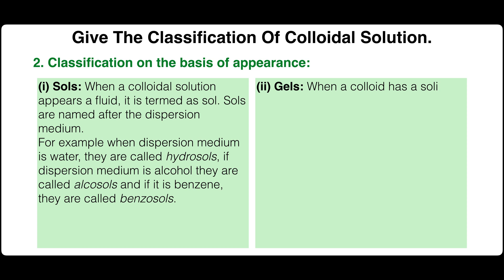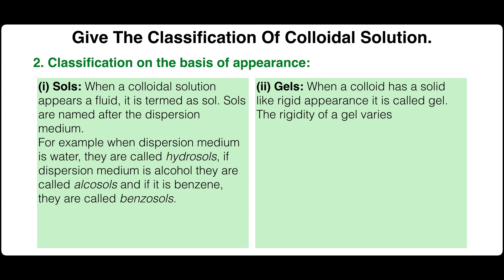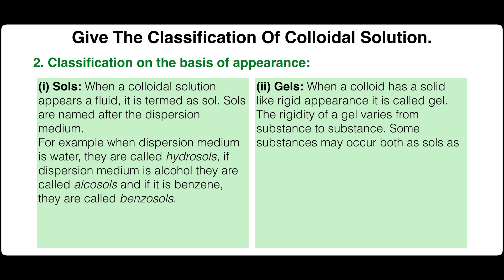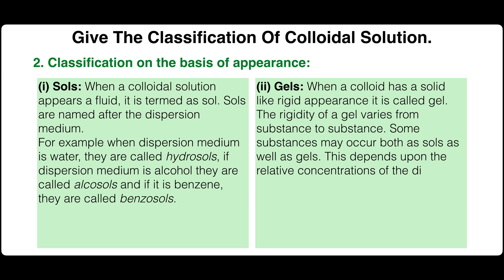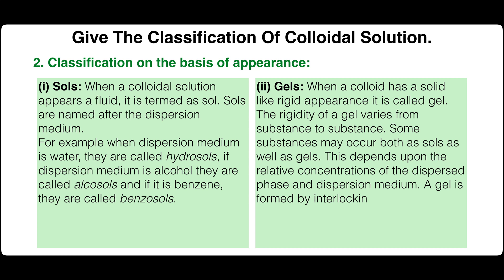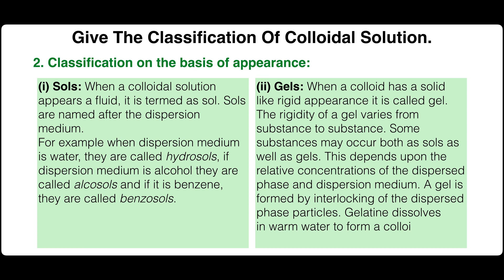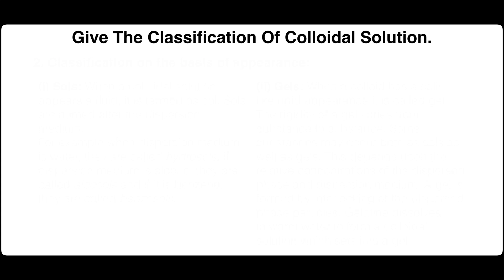Gels: when a colloid has a solid-like rigid appearance, it is called a gel. The rigidity of the gel varies from substance to substance. Some substances may occur both as sol as well as gel, depending upon the relative concentration of the dispersed phase and dispersion medium. A gel is formed by interlocking of the dispersed phase particles. Gelatin dissolves in warm water to form a colloidal solution which sets into a gel.